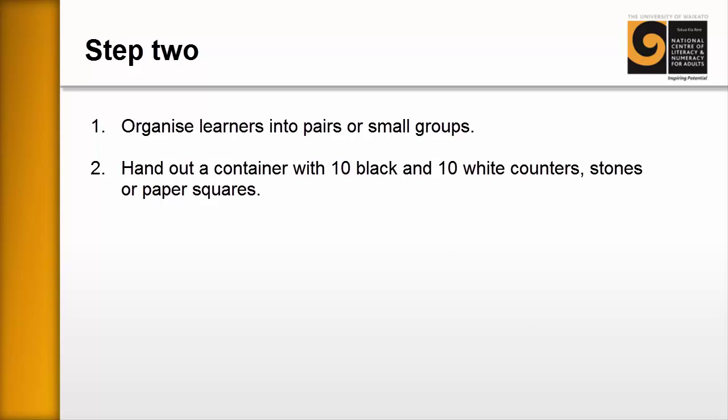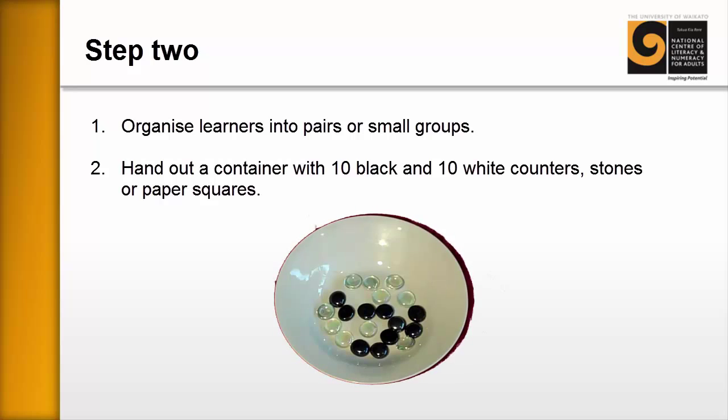Now that you have learner engagement, let's move to step two. Organize the learners into pairs or small groups, whoever they're comfortable working with. Hand out a container with 10 black and 10 white counters, stones or paper squares. Now I've found that you can get good resources from the $2 shop, counters and stones and so on. Or you can simply cut up two different colored pieces of paper into squares.